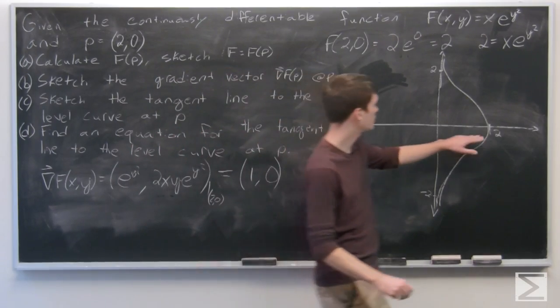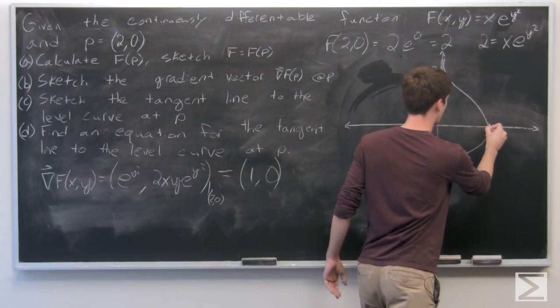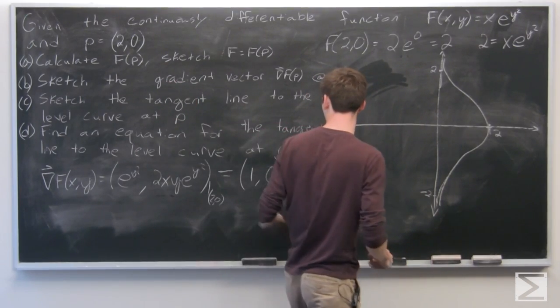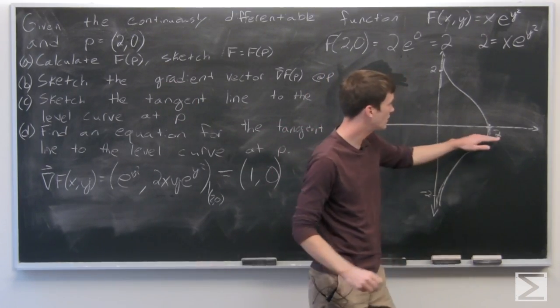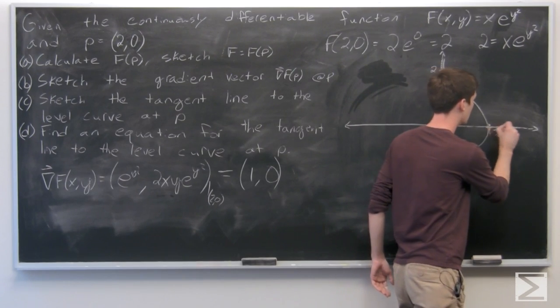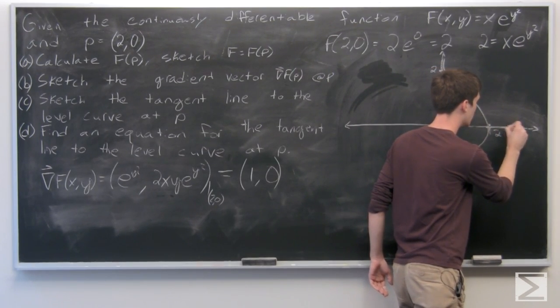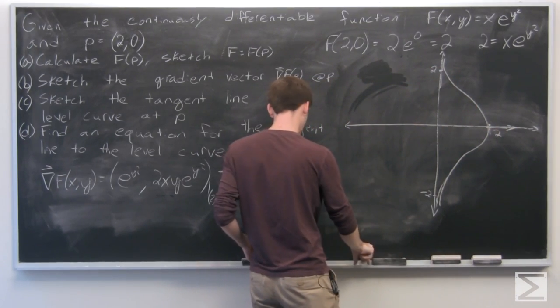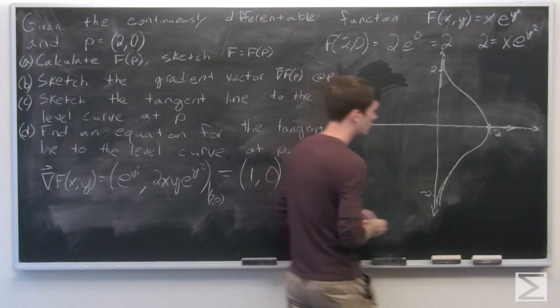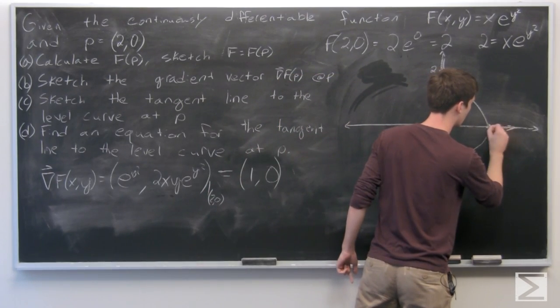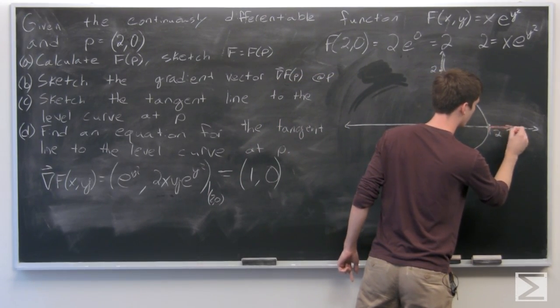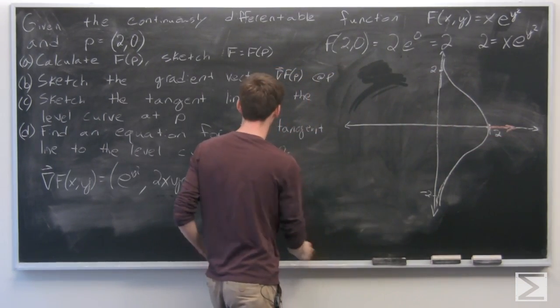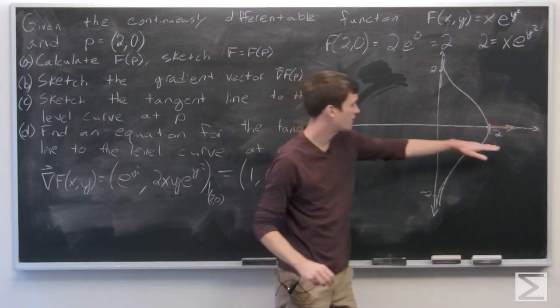so here's our point p at (2,0), and it's going to be pointing in the direction (1,0). So that's just right along the x-axis. I'll try to emphasize it with red. So there's our gradient vector of f at p.